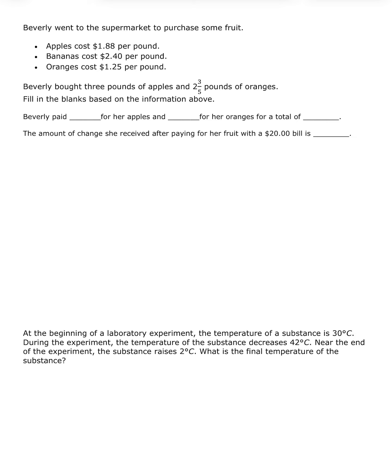Our first question says: Beverly went to the supermarket to purchase some fruit. Apples cost $1.88 per pound, bananas cost $2.40 per pound, oranges cost $1.25 per pound. Beverly bought three pounds of apples — notice they hid that three in words instead of numbers — and two and three-fifths pounds of oranges. We're going to use all that information to fill in the blanks. Beverly paid blank for her apples.